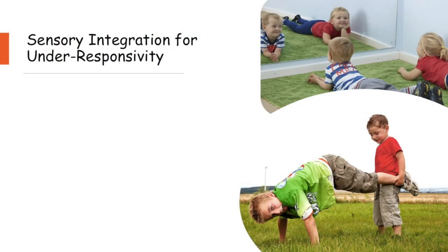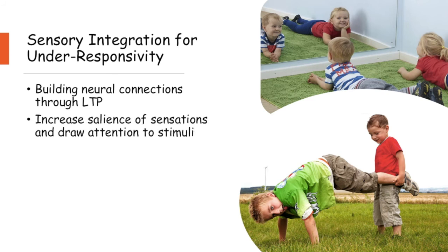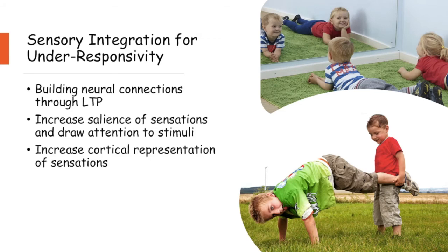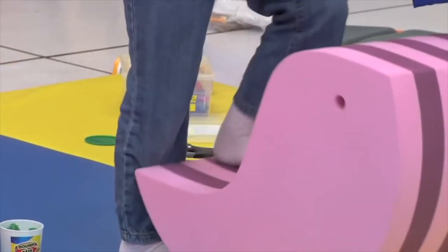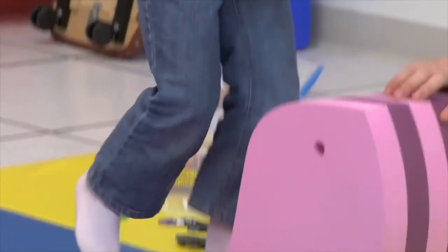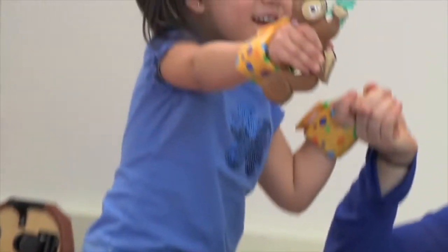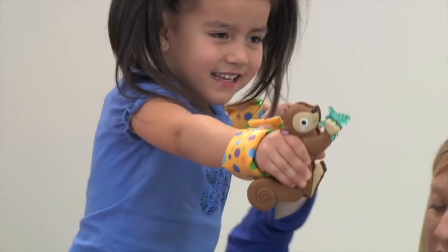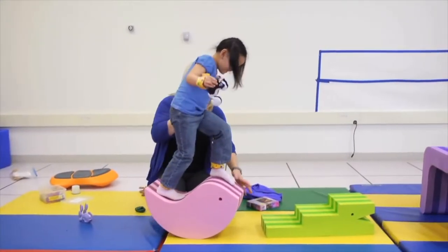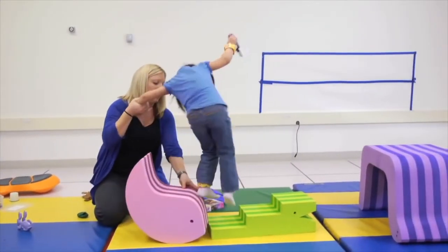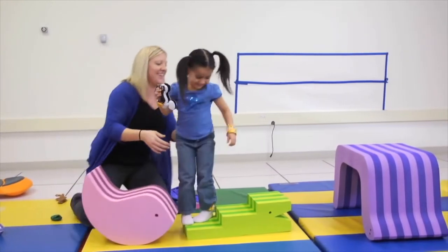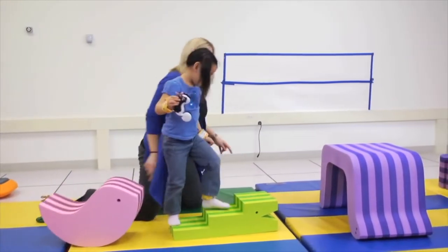Treatment for under-responsivity involves building connections through potentiation to increase salience network connections and draw attention to stimuli, or to increase cortical representation of sensations. Treatment may include activities performed in front of a mirror to provide visual cues to improve body awareness, fine motor activities to increase tactile recognition, and experimenting with heavy and light objects to learn to discriminate the difference.